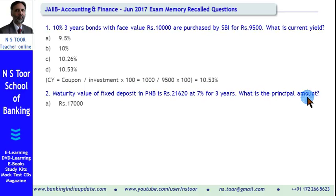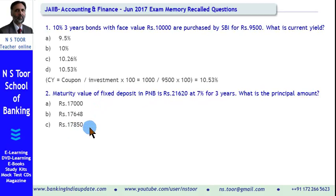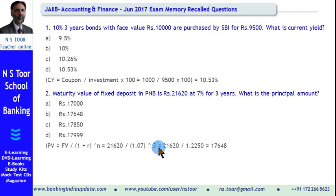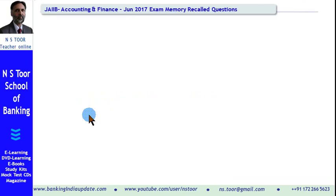These are the answers before us. To convert future value into present value, the formula we use is: Present Value = Future Value divided by (1 + R) raised to power n. This is the future value, this is the rate of interest plus 1, raised to power 3. And this is what we get: Rs. 17,648. This means option B is the correct answer.